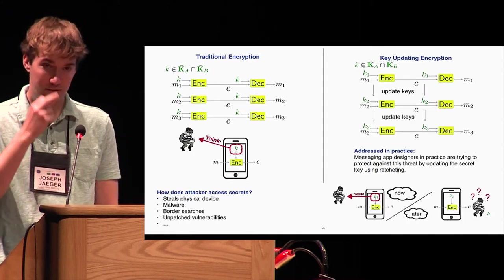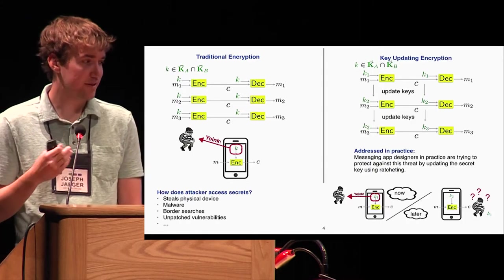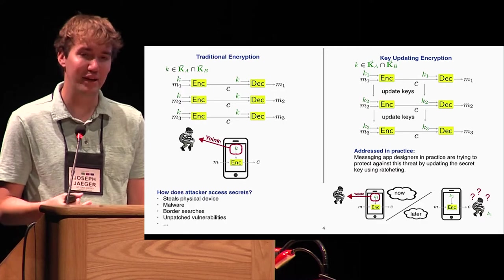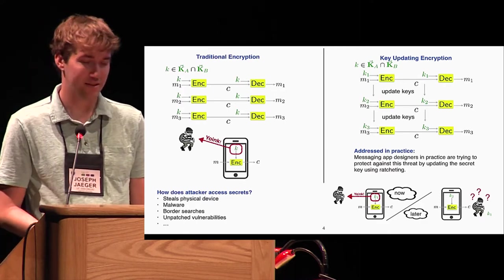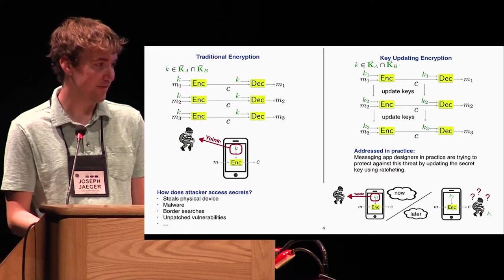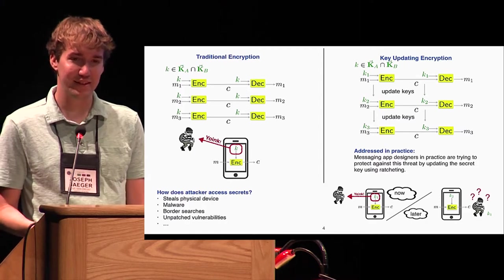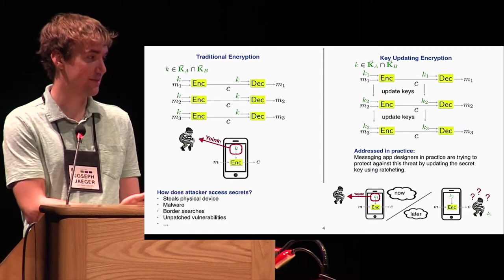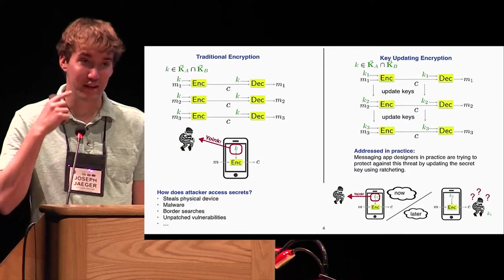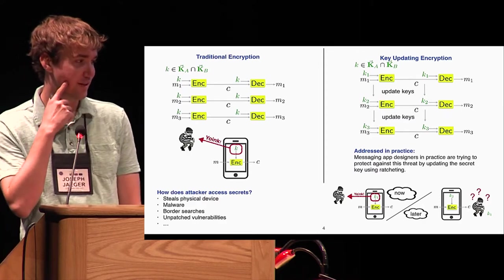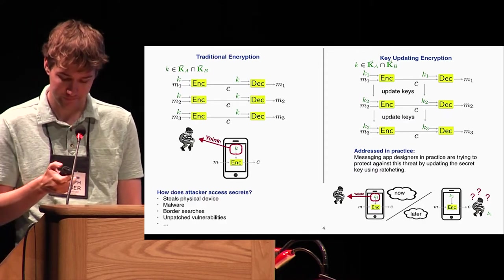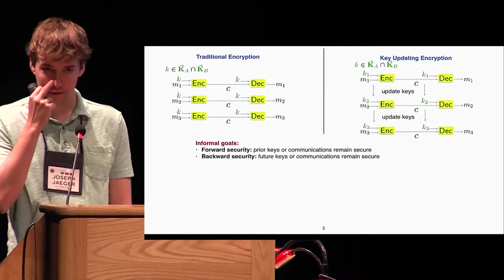In practice, to address this, various messaging apps are using techniques where they update their keys over time: K1, K2, K3. The idea is that an adversary who steals K1 shouldn't be able to learn anything about what was encrypted using a different key, say K2.